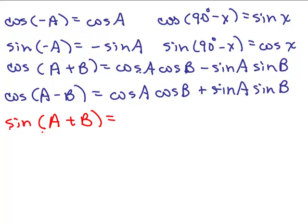The next identity we're going to derive is the sine of a plus b. We'll be using some identities: the cosine of negative a equals the cosine of a, the sine of negative a equals negative the sine of a, and also the cosine of 90 degrees minus x is the same as the sine of x. Those represent the two acute angles in a right triangle — the sine of one acute angle is the cosine of the other. So if this is angle x, the other angle would be 90 degrees minus x.